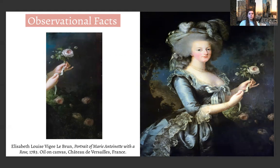The Rococo period represents art, sculpture, and architecture that combines asymmetry, scrolling curves, gilding, white and pastel colors, sculpted molding, and trompe-l'œil — which is the illusion of the eye, something we learned earlier this semester. Artists used these elements to create surprise and the illusion of motion and drama.